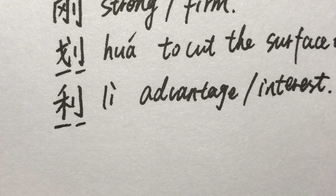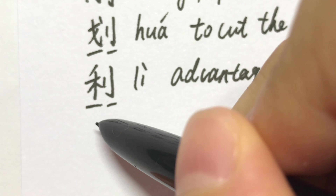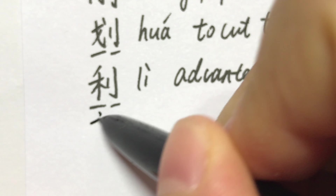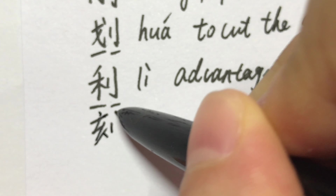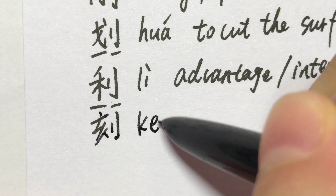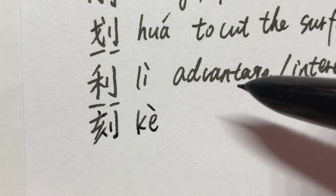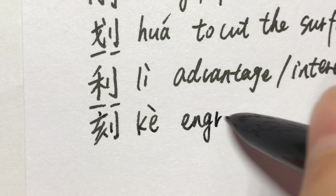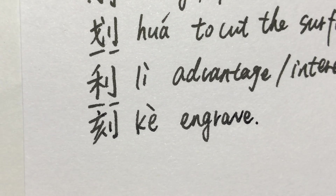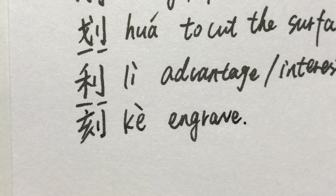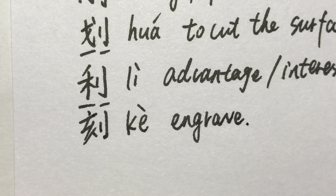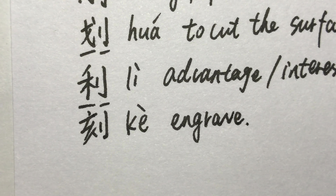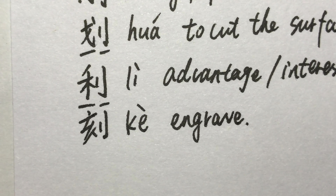And 刻 (kè) means engrave. For example: 我的名字被刻在了戒指上。 My name was engraved on the ring. 刻.